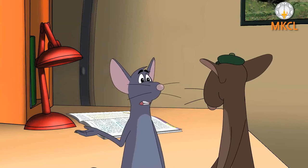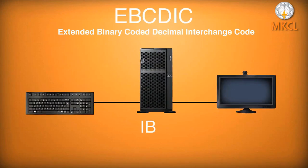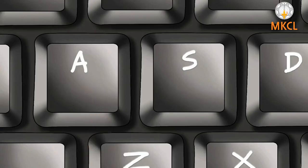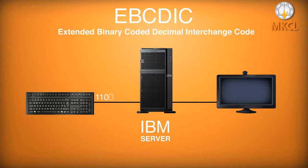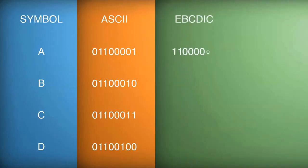Which other coding systems are there? Well, there is EBCDIC, which was developed by the computer company IBM and used for large computers. It would translate the character A into 11000001, and similarly we can see different translations for other characters as well.